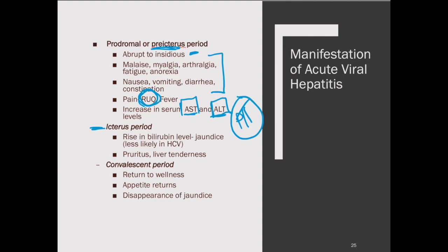Then we have the icteric period — now the hepatitis and swelling of the liver has caused a problem with bilirubin, so bilirubin builds up and we end up with jaundice. This is much less likely in hepatitis C, but you will definitely see it in hep A and B. You'll also get pruritus — itching — whenever there's a rise in bilirubin. Pruritus and jaundice are huge signs that somebody has a problem with their liver. Remember, one of the best places to check for jaundice is not just the skin but the sclera of the eyes — the sclera turns yellow and it's very obvious. Then we have the convalescent period — returning to normal, appetite returns, jaundice disappears.